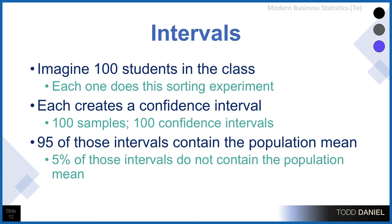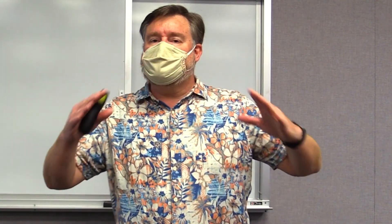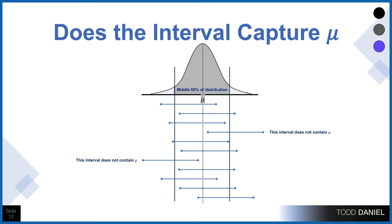Each one of us has created our own random sample. Let's imagine 100 students in the class each following along, each creating their own random sample and therefore their own confidence interval — so we now have 100 samples with 100 confidence intervals. On average, 95 of those 100 intervals would contain the population mean, and 5% of those intervals would not contain the population mean.